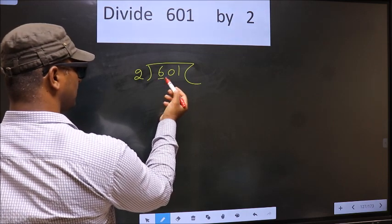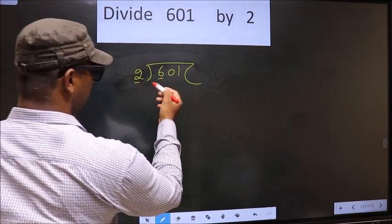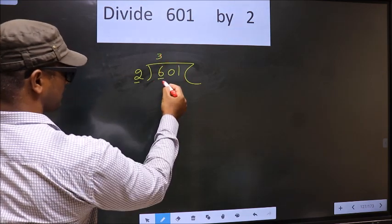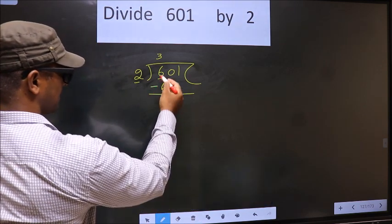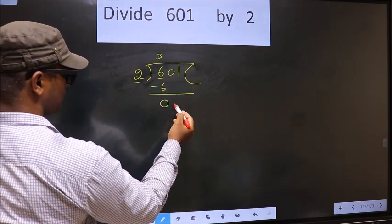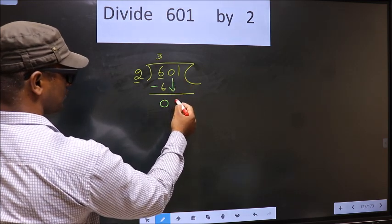Now here we have 6. Here 2. When do we get 6 in 2 table? 2, 3 is 6. Now you subtract. 6 minus 6, 0. Now you bring down the next number. So 0 down.